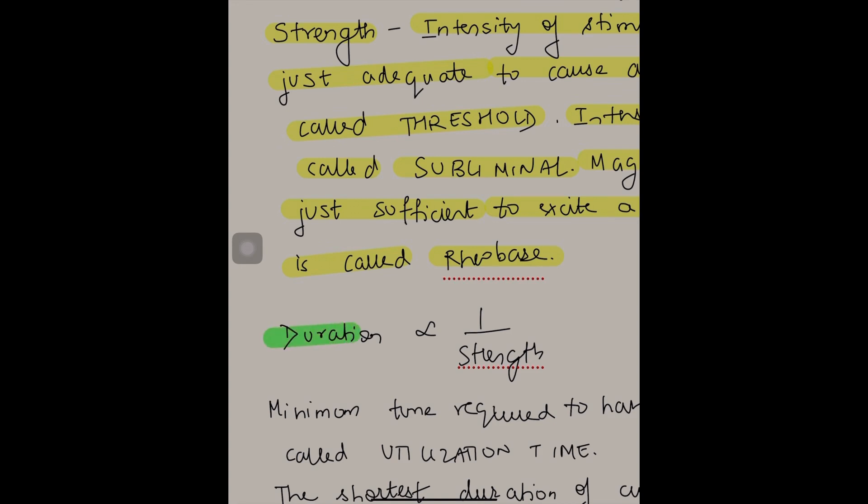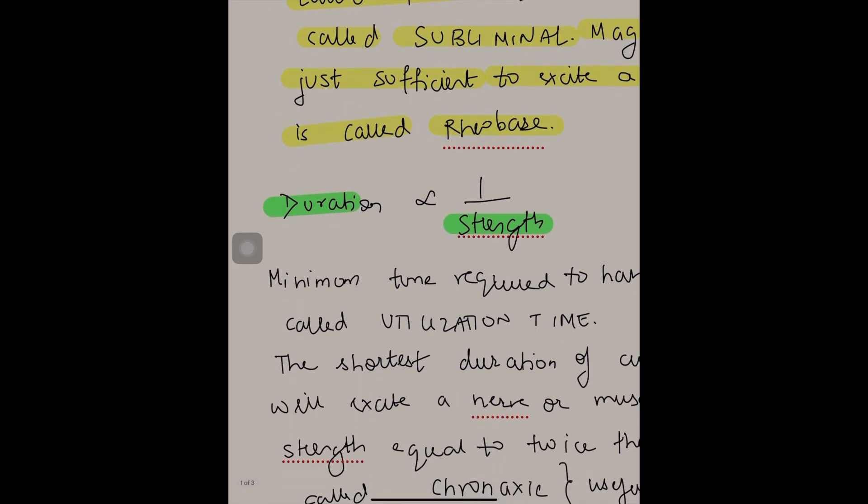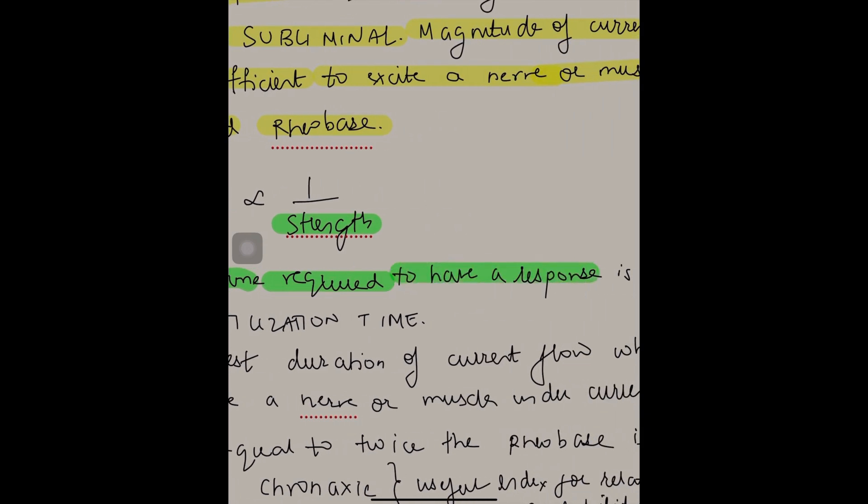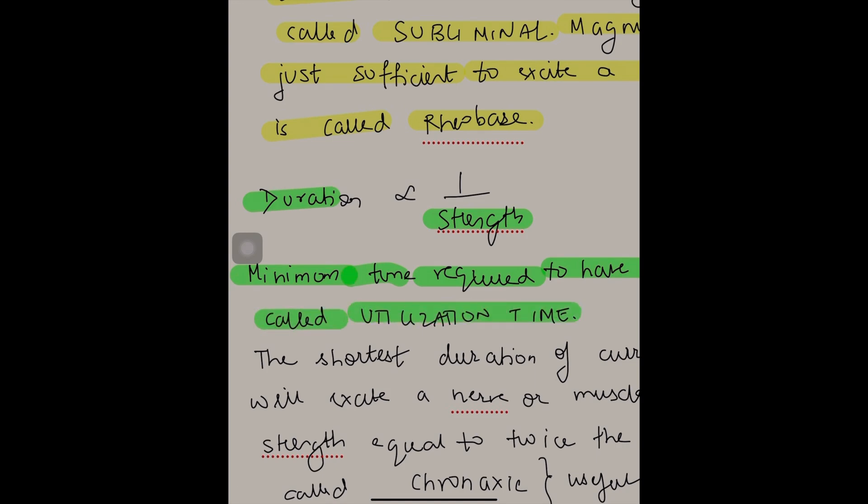The duration is inversely proportional to strength. The minimum time required to have a response is called utilization time.